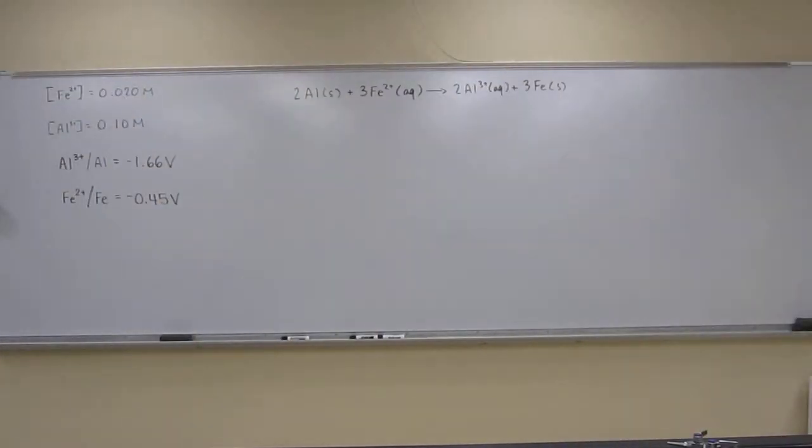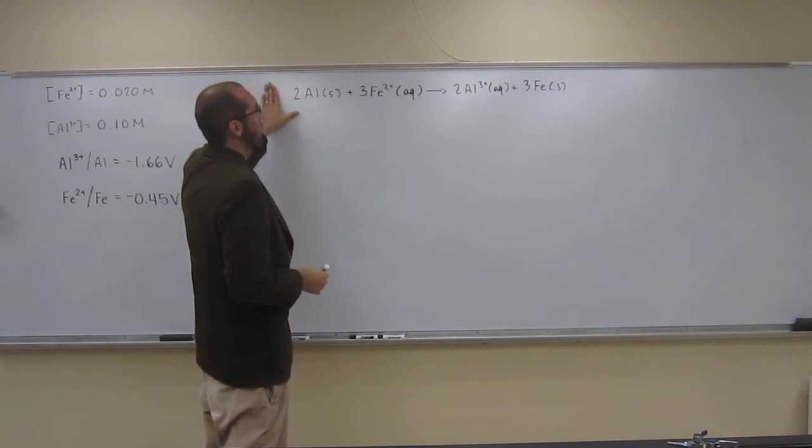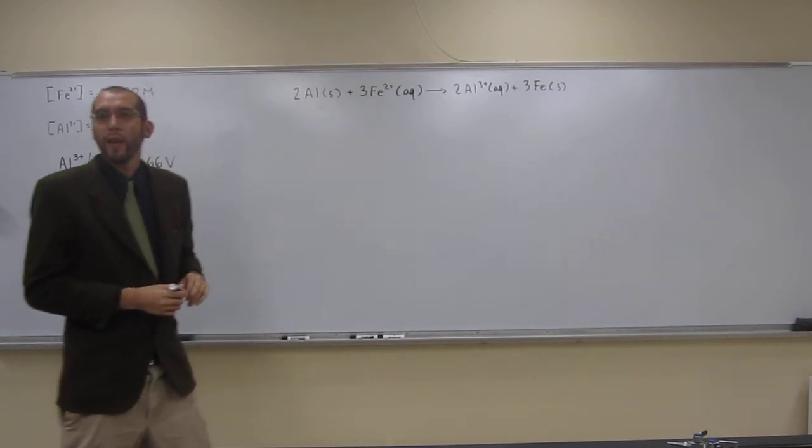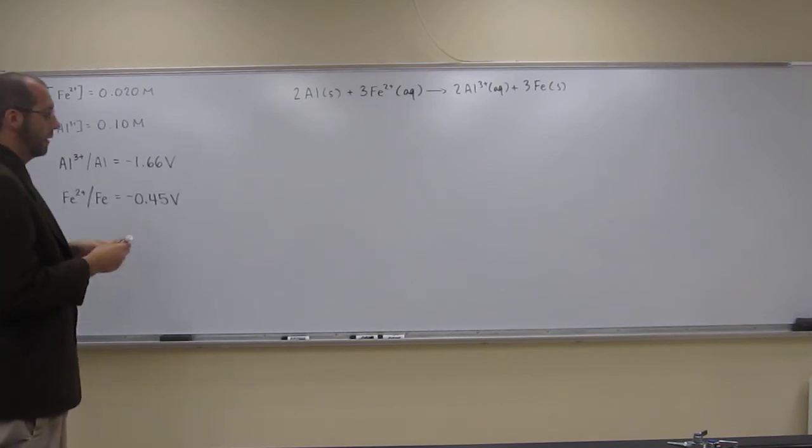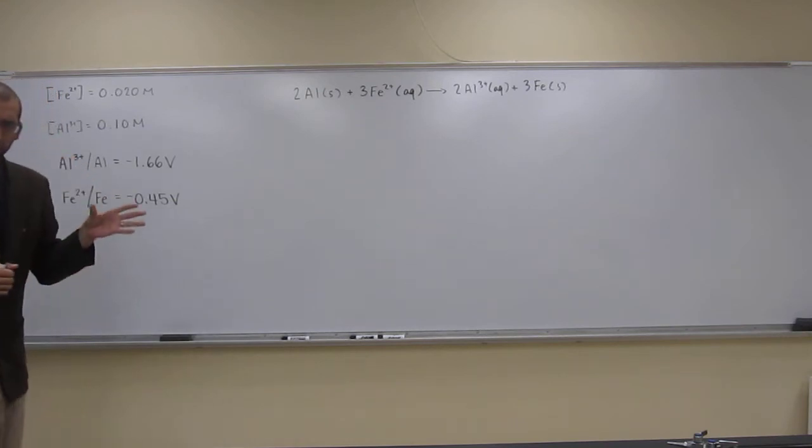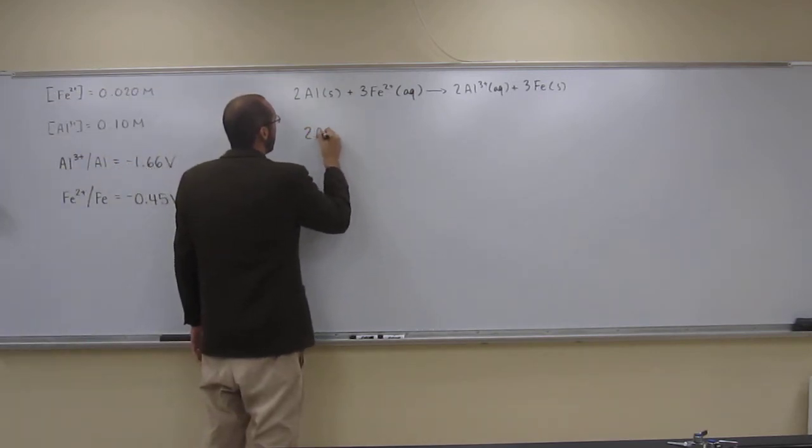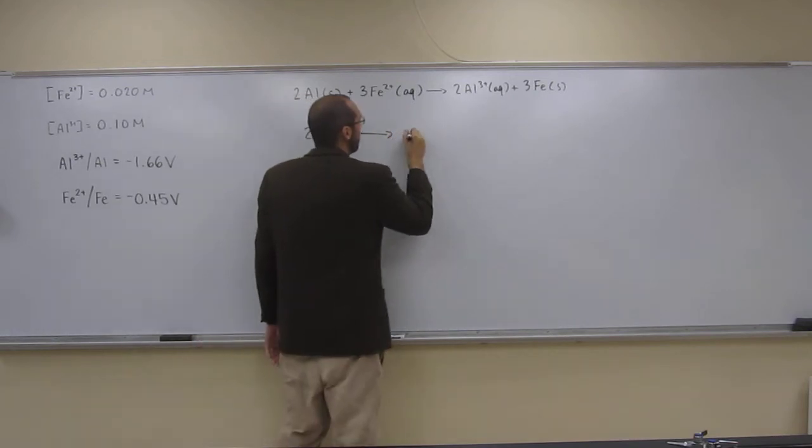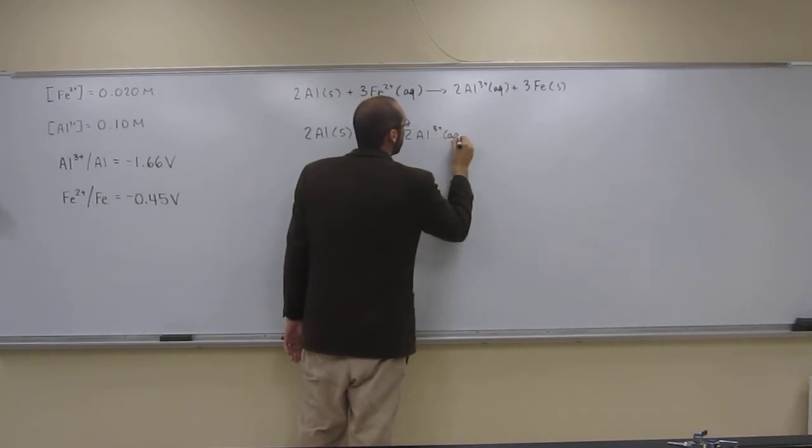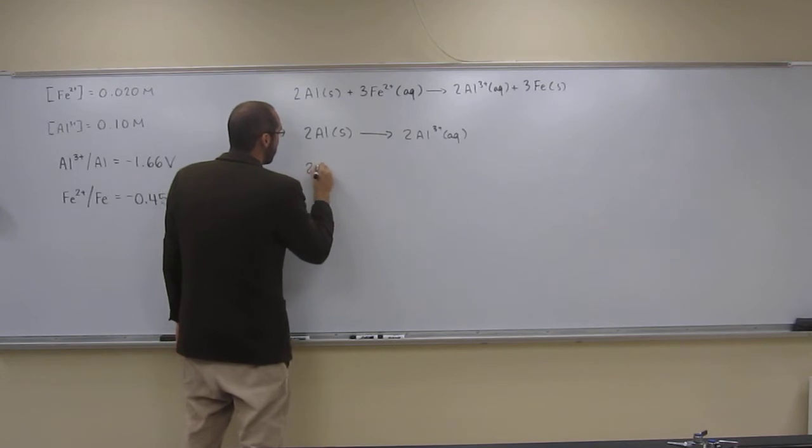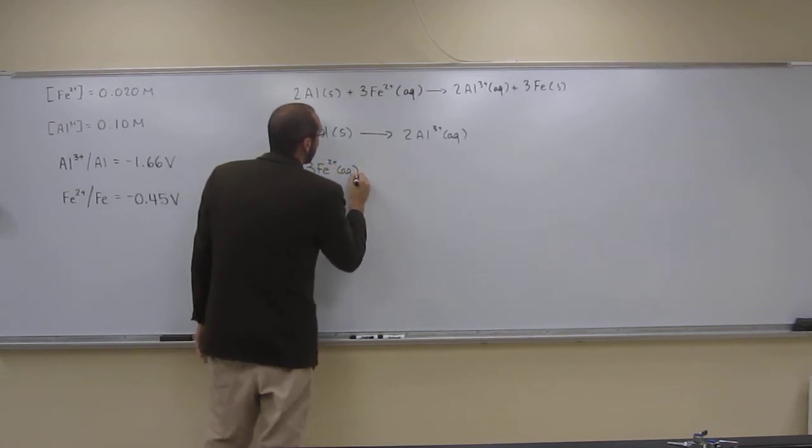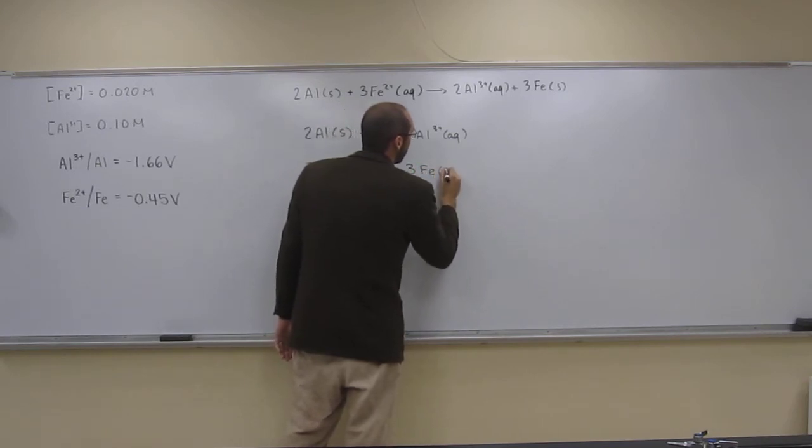So again, for these ones you can start in different places. The place I usually like to start is to split this balanced redox equation into its half reactions. There's a number of reasons why I would do that, but initially it's going to define which is the reduction reaction and which is the oxidation reaction. So 2 Al solid goes to 2 Al 3 plus aqueous, and the other half reaction is going to be 3 Fe 2 plus aqueous equals 3 Fe solid.